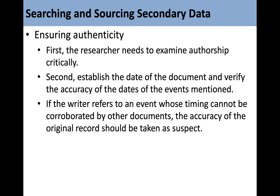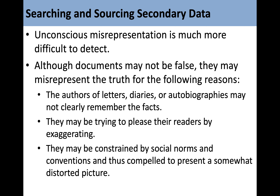Ensuring authenticity: first, the researcher needs to examine authorship critically. Second, establish the date of the document and verify the accuracy of the dates of events mentioned. If the writer refers to an event whose timing cannot be corroborated by other documents, the accuracy of the original record should be taken as suspect. Unconscious misrepresentation is much more difficult to detect. Although documents may not be false, they may misrepresent the truth because the authors may not clearly remember the facts, they may be trying to please readers by exaggerating, or they may be constrained by social norms and thus compelled to present a somewhat distorted picture.